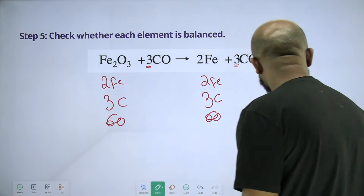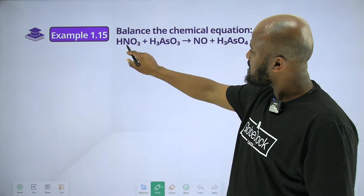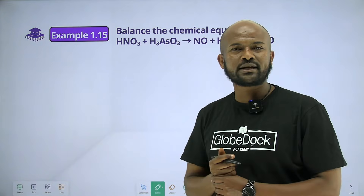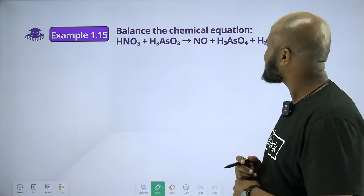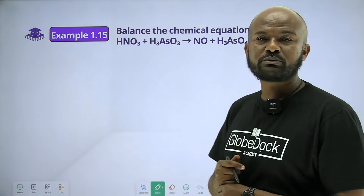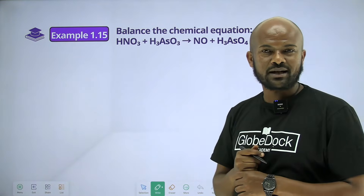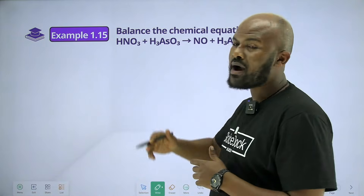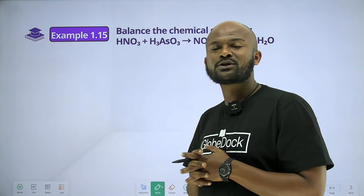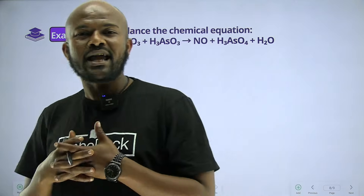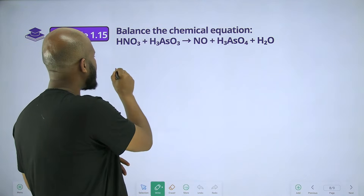Now let's see another example. Nitric acid reacts with an arsenic-containing hydrogen arsenide compound, producing nitrogen monoxide and arsenic acid in water. So this reaction is a balanced redox reaction.